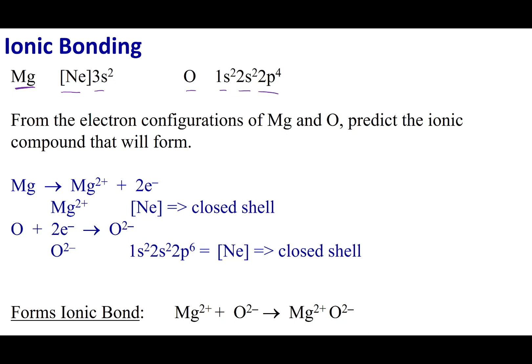When we make ionic compounds, we need to make ions out of our elements. For magnesium, you can see that it was in the second column, so you're going to remove two electrons from it.